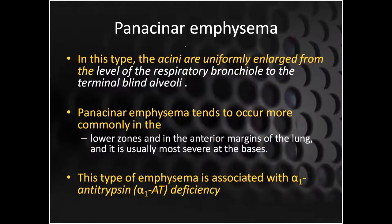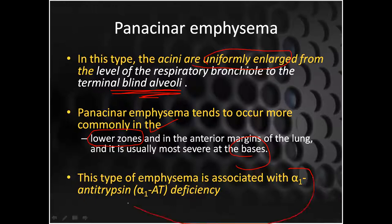In panacenar emphysema, the acinus is uniformly enlarged from the level of the respiratory bronchiole to the terminal blind alveoli, and this is more common in the lower zones — the bases of the lungs are affected. This emphysema is basically related to alpha-1 antitrypsin deficiency. Key differentiating features: centriacenar is proximal area, upper zones, caused by smoking; panacenar is distal area, lower zones, caused by alpha-1 antitrypsin deficiency.